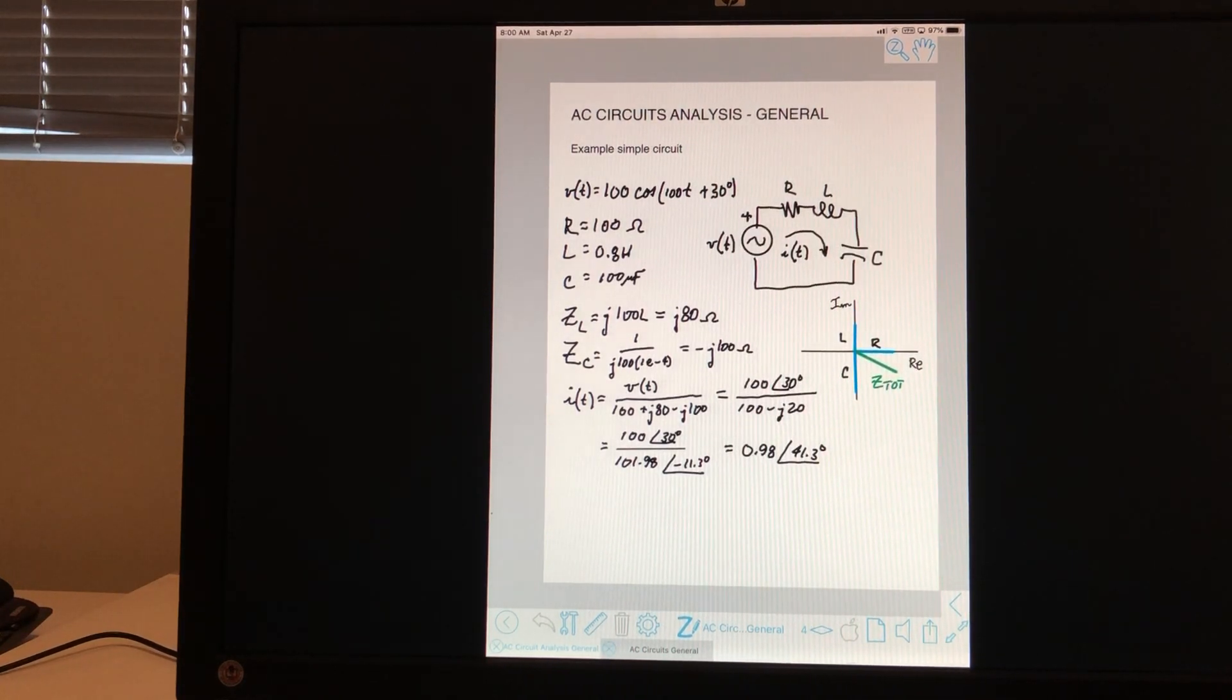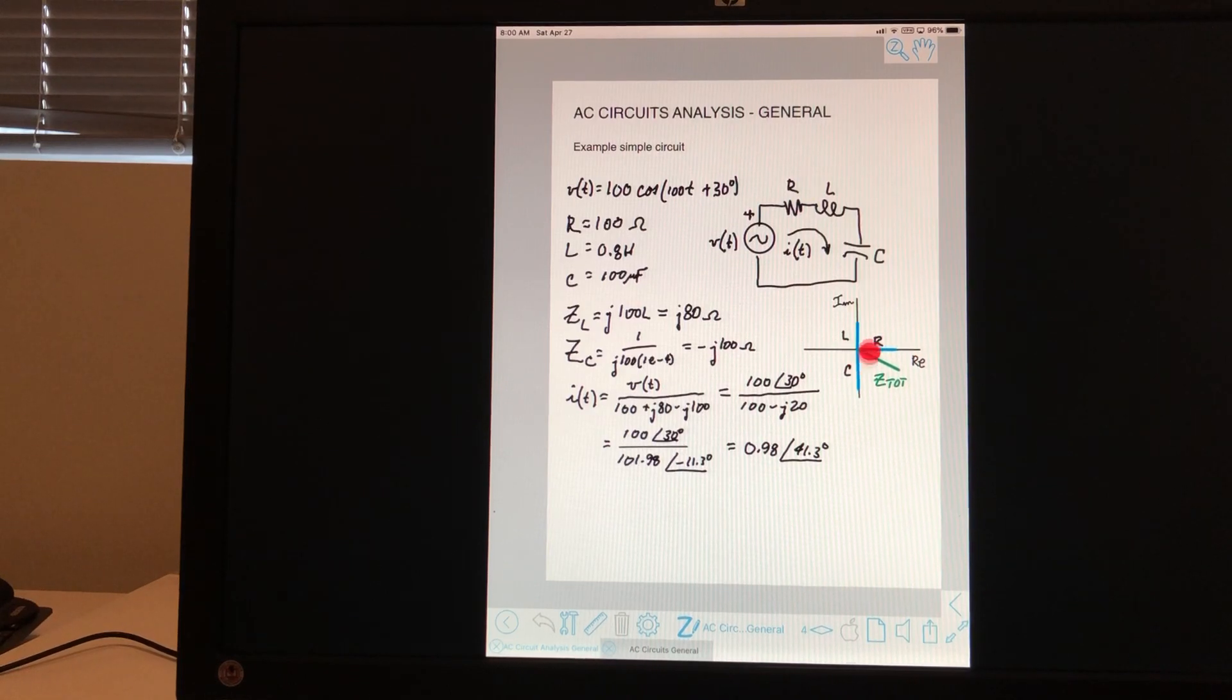We can plot it. We can plot the actual impedance. This is the impedance being plotted on the complex plane. So the plus J80 goes right here. The minus J100 goes here. And obviously the resistance runs along the real axis.